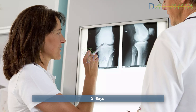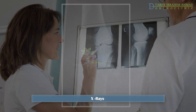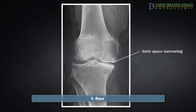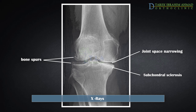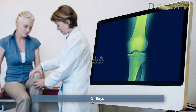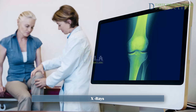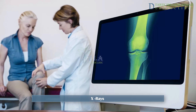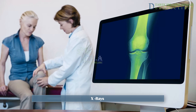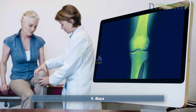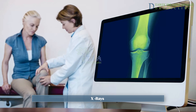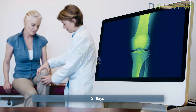The doctor will order standing X-rays of both knees. X-rays can show loss of joint space between the femur and tibia, indicating a loss of cartilage. An X-ray can also show bone spurs and subchondral bone sclerosis. Notably, some people may have X-rays showing significant signs of knee osteoarthritis and experience no pain, while others may have few signs on X-ray but have significant pain.